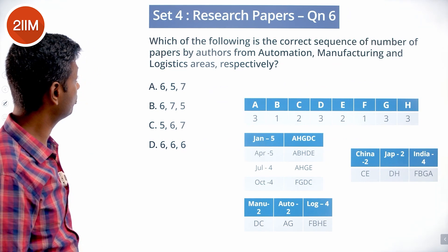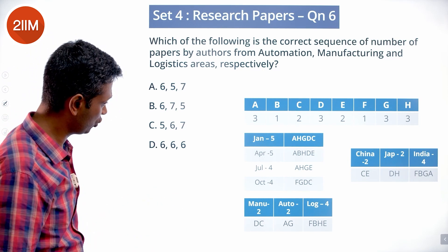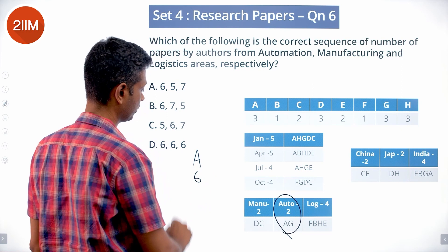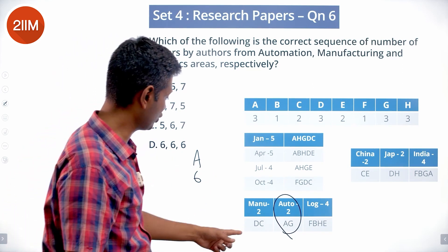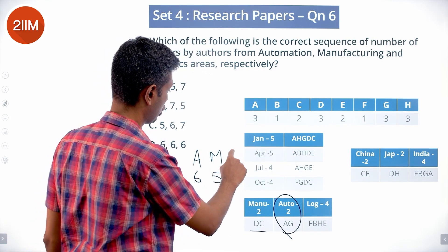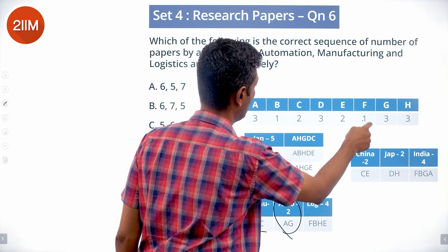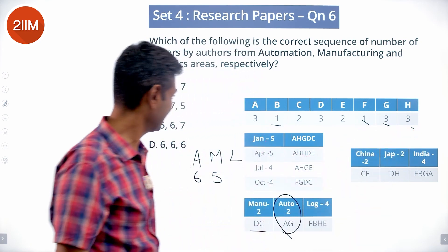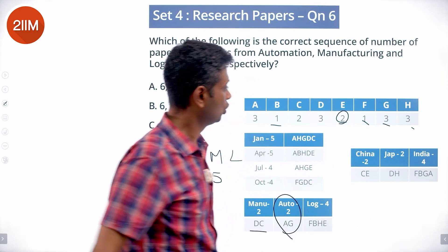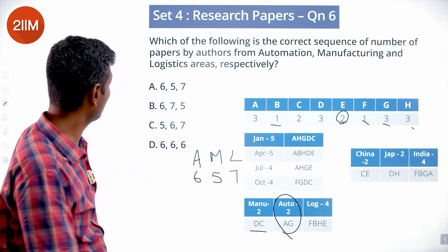Which is the correct sequence of number of papers by authors from automation, manufacturing, and logistics respectively? Automation is A and G: 3+3 = 6. Manufacturing is D and C: 3+2 = 5. Logistics is F, B, H, E: 1+1+3+2 = 7. Total: 6+5+7 = 18. The answer is 6, 5, 7.